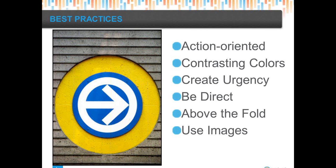We want the call to action to be above the fold. That's newspaper parlance — everything on the top half of a folded newspaper is more important. On a mobile device, laptop, or monitor, everything above the fold is what you can actually see. If you're trying to drive someone to fill out a form, make sure that request is above the fold. We also recommend using images — a picture or an icon that's catchy. You can test different language, colors, and images.